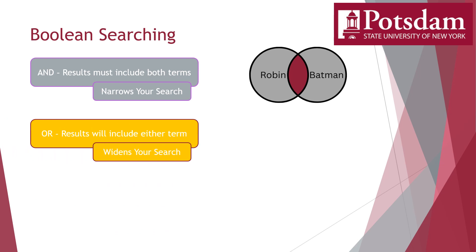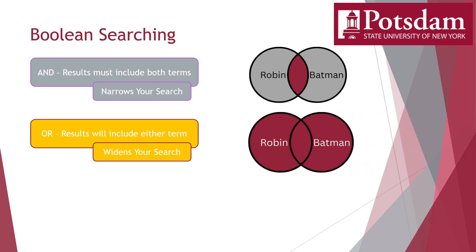OR does the opposite — it broadens your search. When you put OR between two search terms, the database will return every article that includes either one. So if you conduct a search for Robin OR Batman, the database will give you everything that only mentions Batman, everything that mentions Batman and Robin, and everything that only mentions Robin. So you'll get the comic book character, but also the bird robins, Robin Williams, Monty Python's Brave Sir Robin, the Brooklyn Robins baseball team, and anything else named Robin.